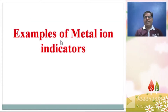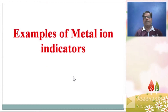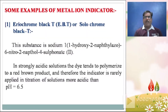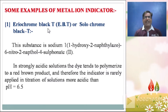Examples of metal ion indicators: mainly three indicators are used in complexometry titration: EBT (Eriochrome Black T), Solochrome Dark Blue (also known as Calcon), and Murexide. Our syllabus contains only these three metal ion indicators.